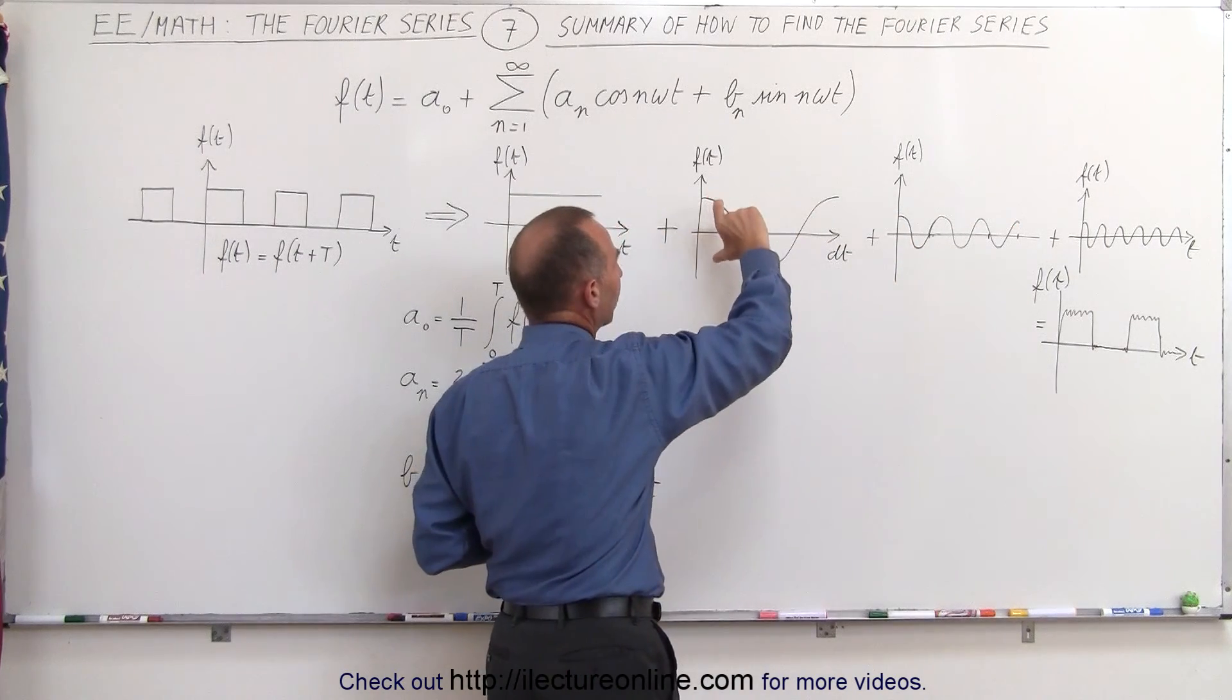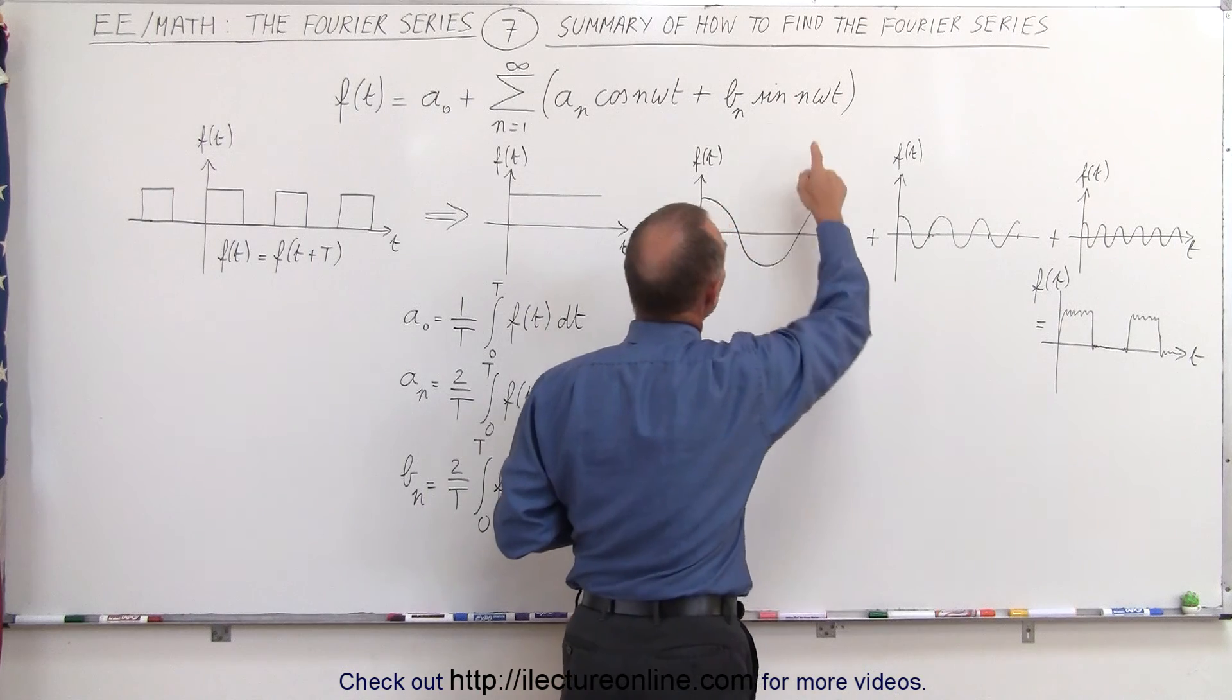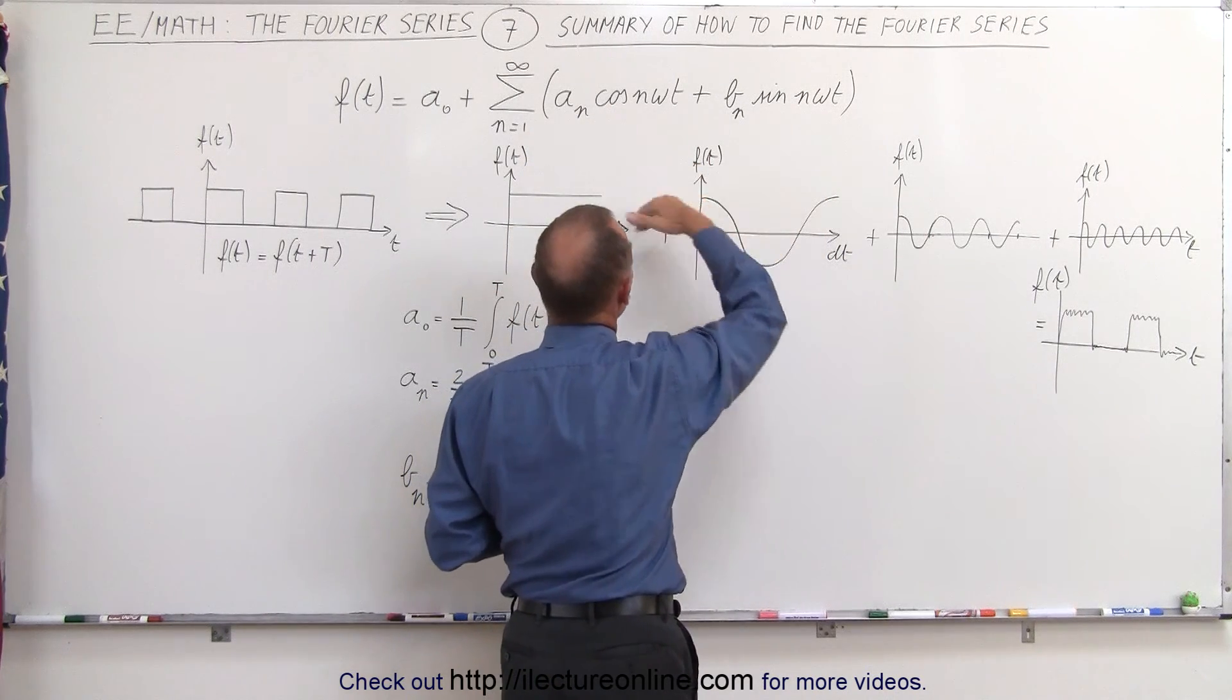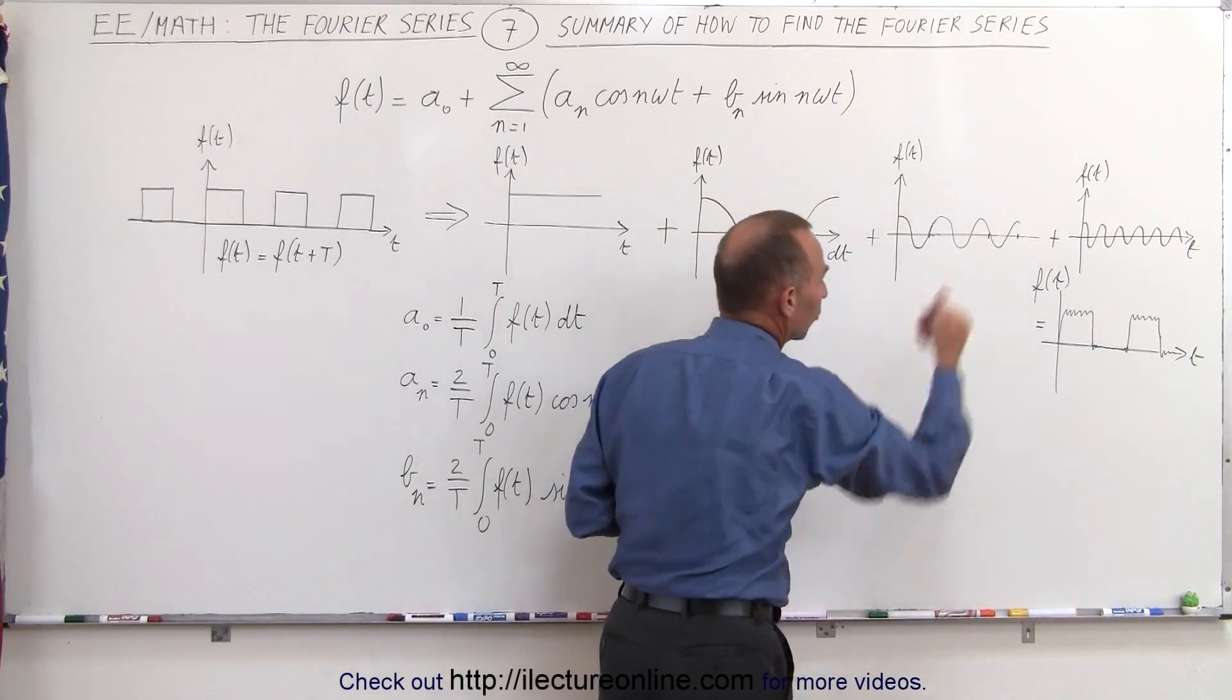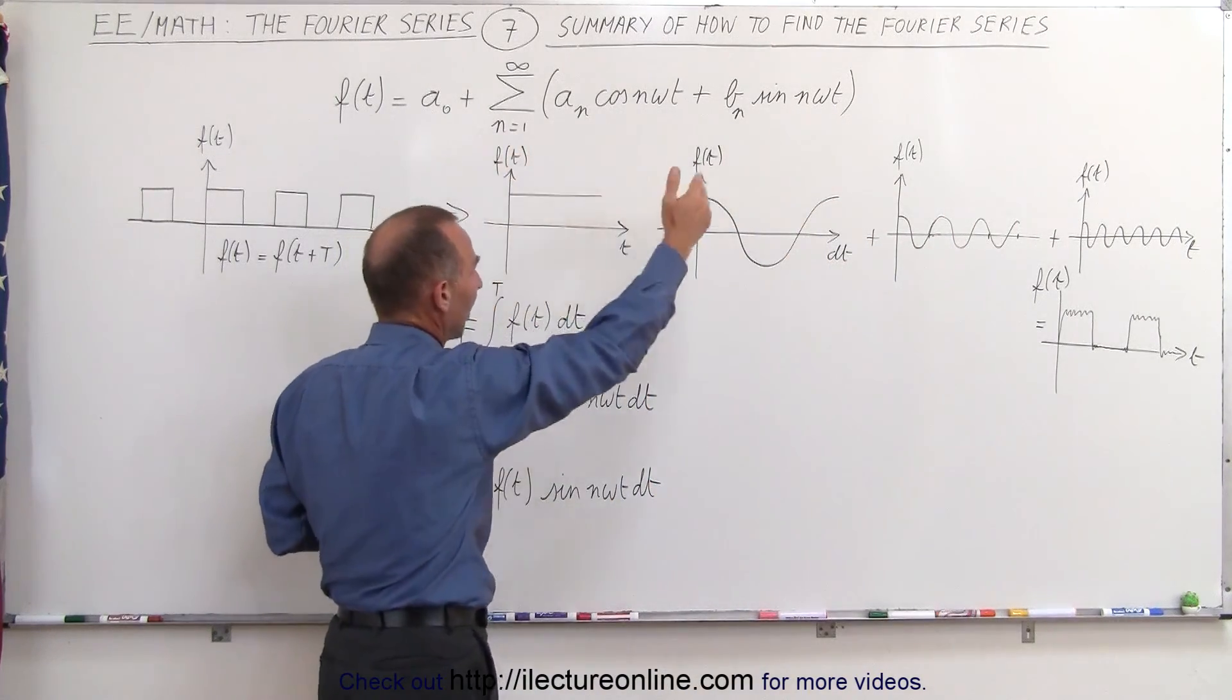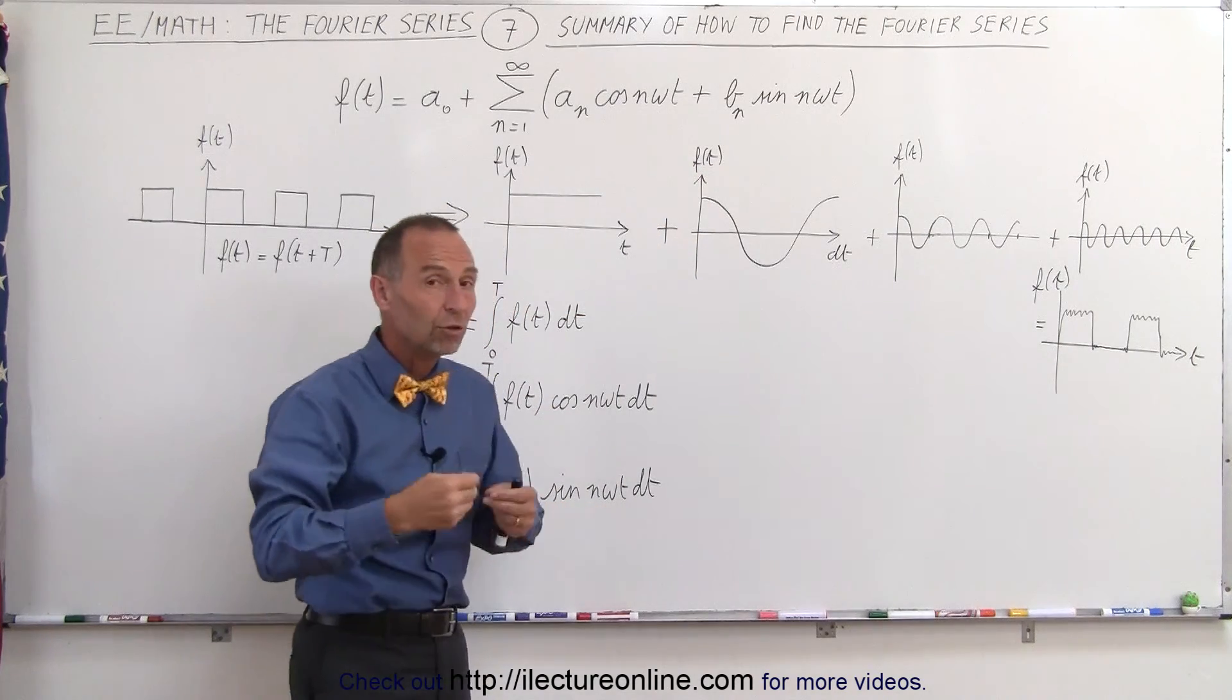Notice that the amplitude of the functions will decrease as the number n increases, so for n equals 1 we'll have something like this, for n equals 2 or 3 we'll have the next one and so forth. Sometimes it'll skip an n, it'll go from 1 to 3 to 5 to 7 and so forth, sometimes it uses every n.